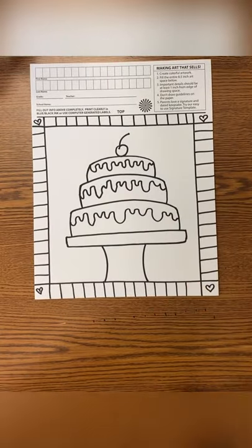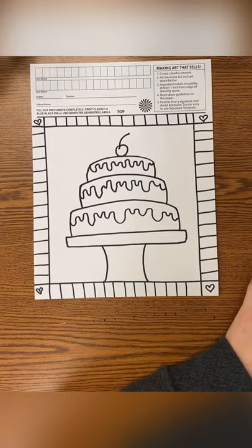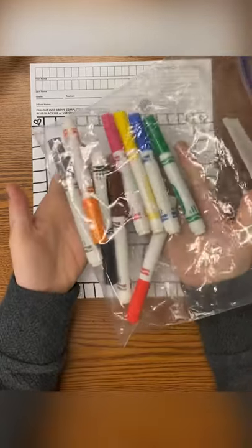At this time, if you've drawn in pencil, you need to outline with Sharpie. And then it will be time for us to color.